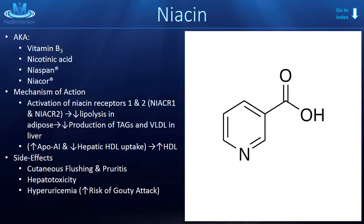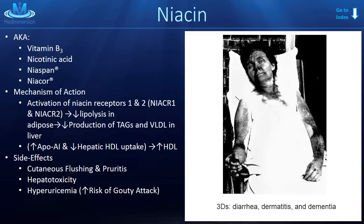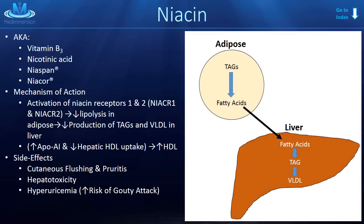Next in our anti-hyperlipidemics is niacin, also called vitamin B3 or nicotinic acid, with brand names Niaspan and Nicor. This is the niacin whose deficiency causes pellagra — known by the three D's: diarrhea, dermatitis, and dementia. The mechanism of action for niacin's antihyperlipidemic effect is that it acts on niacin receptors 1 and 2, causing a decrease in lipolysis in adipose tissue, which decreases fatty acid production, thereby decreasing the production of triglycerides and very low-density lipoprotein particles in the liver.